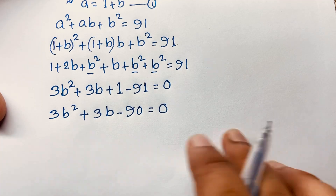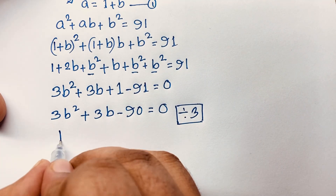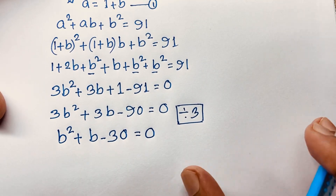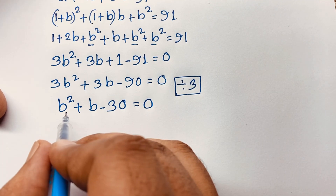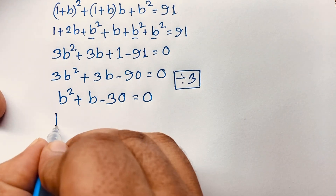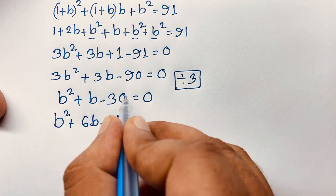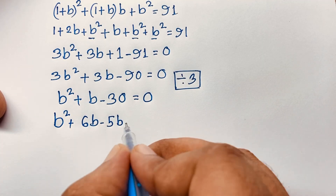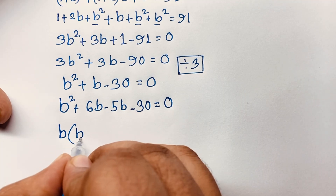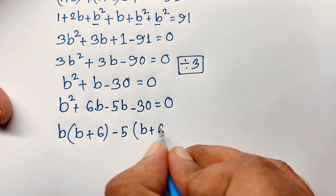Dividing both sides by 3 gives b² plus b minus 30 equals 0. Factoring using the middle-term method: b² plus 6b minus 5b minus 30 equals 0, which gives b(b plus 6) minus 5(b plus 6) equals 0.